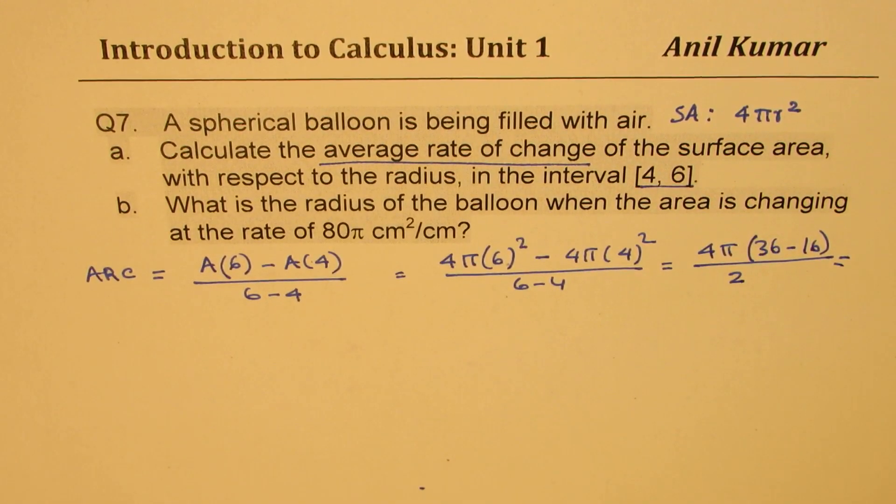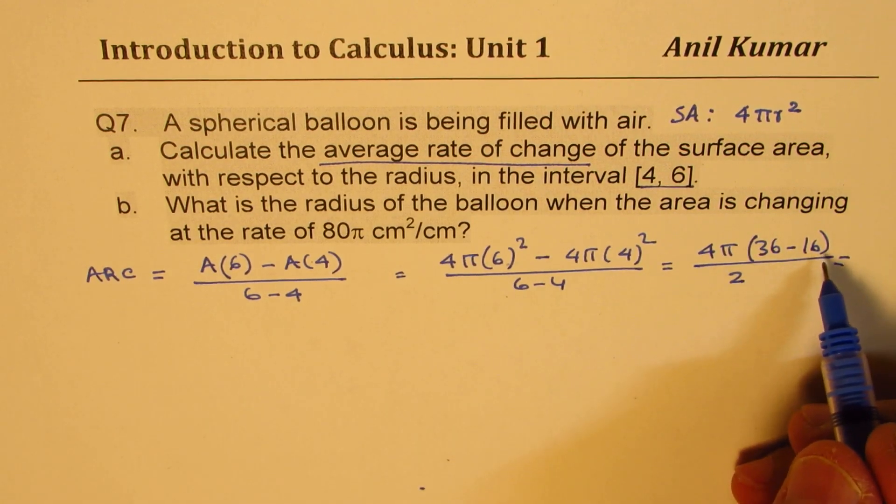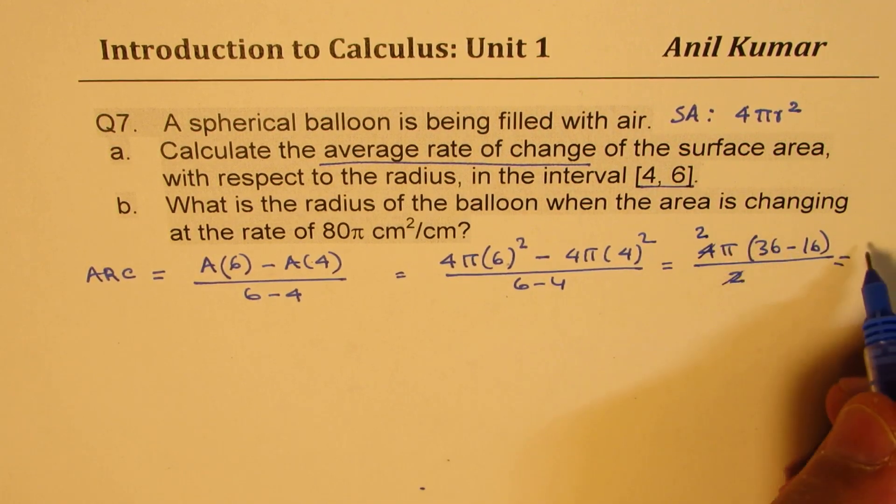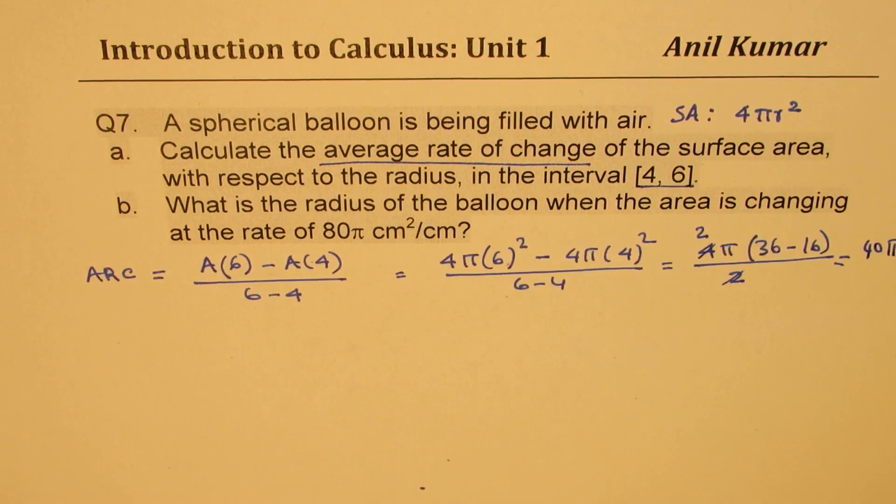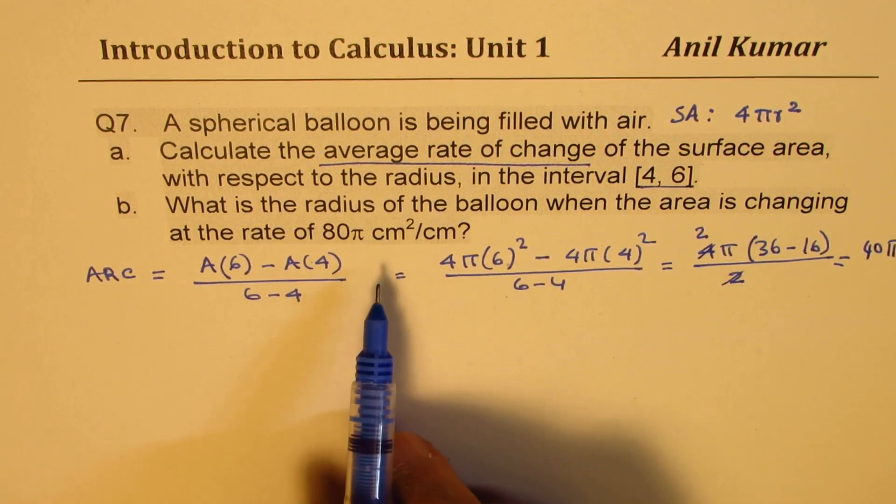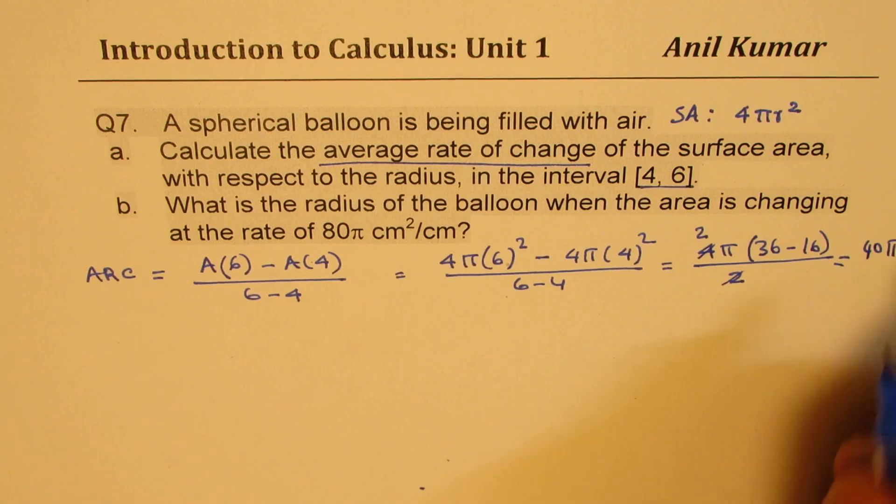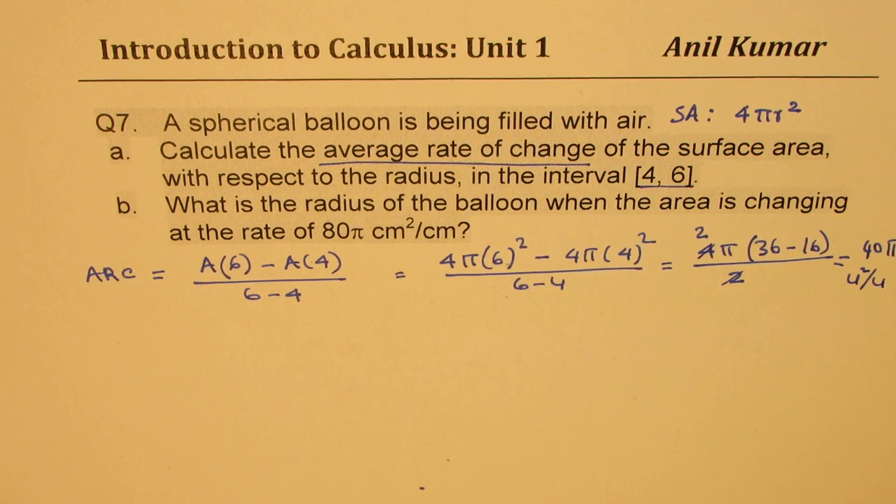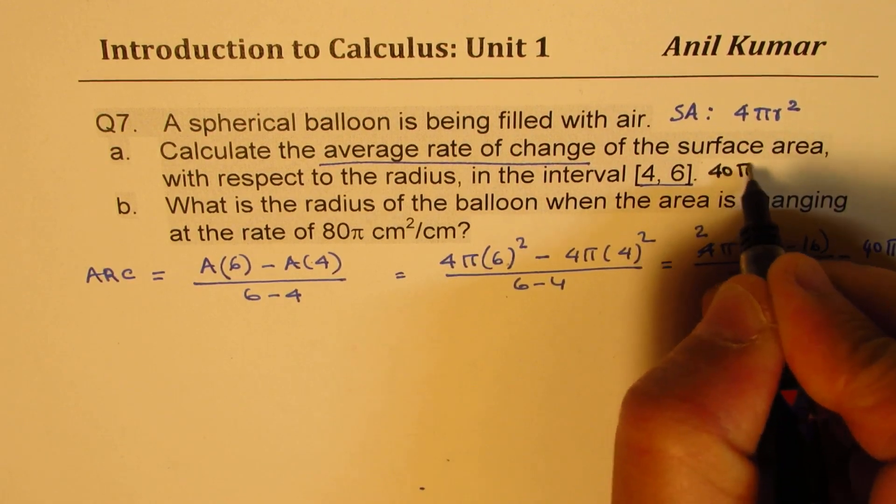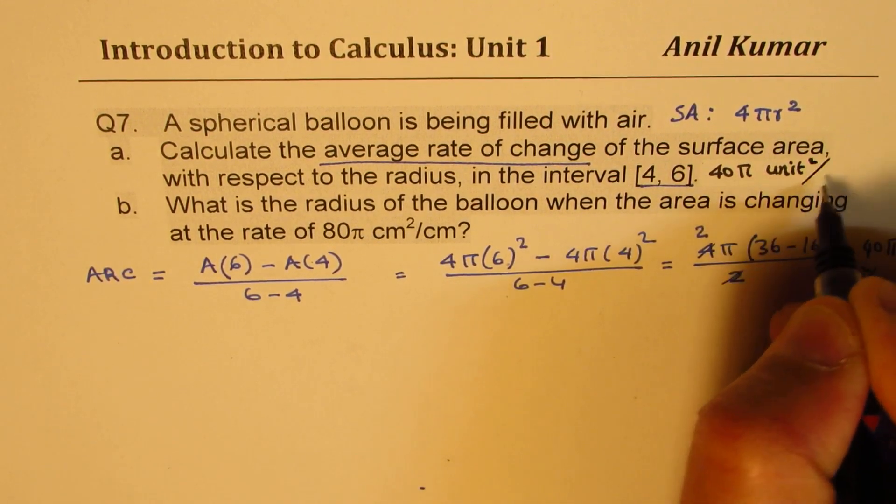So now 36 minus 16 is 20 and that divided by 2 gives us 10. So we have 40π as the rate of change of area. So unit square over unit is the answer. So that is part A. We get here 40π unit²/unit.